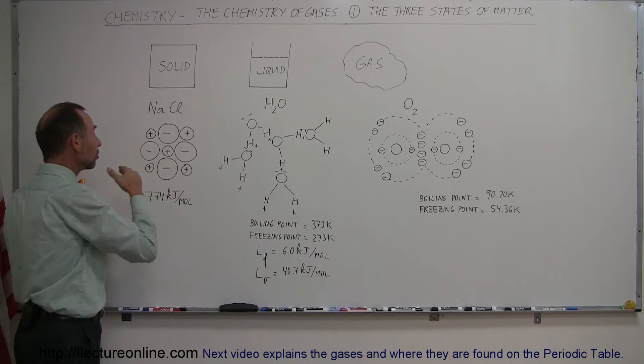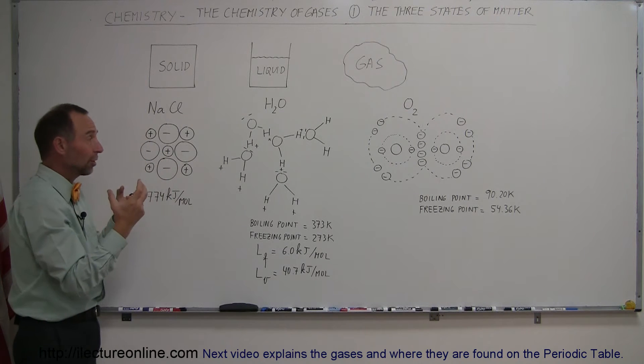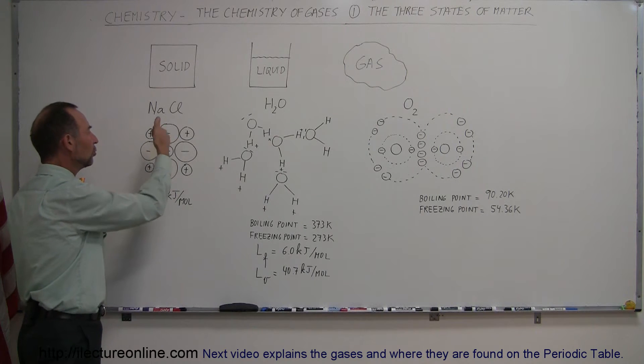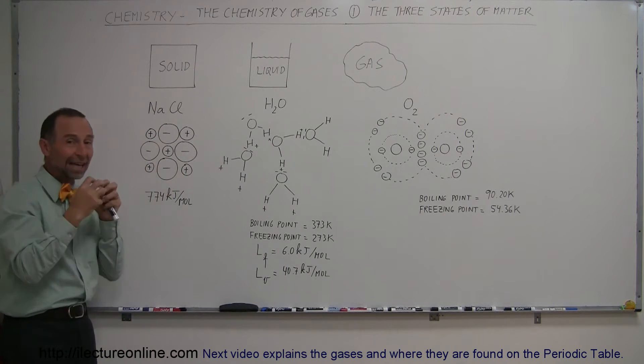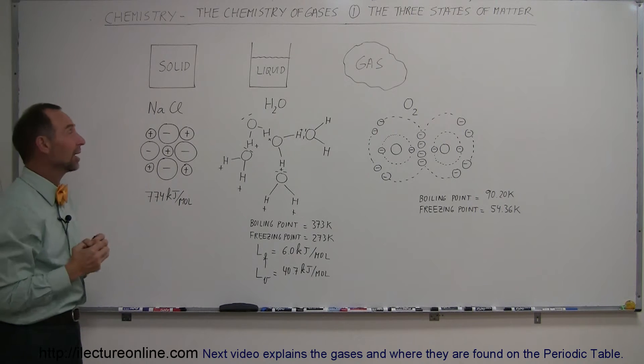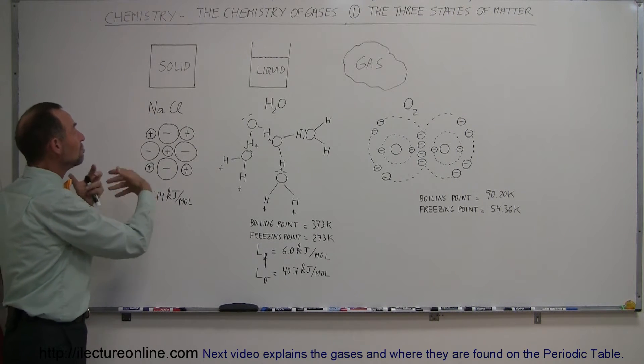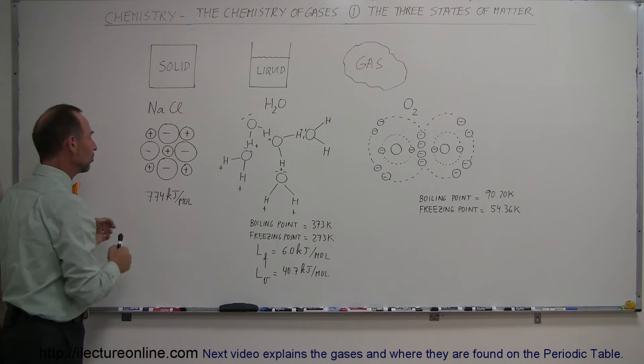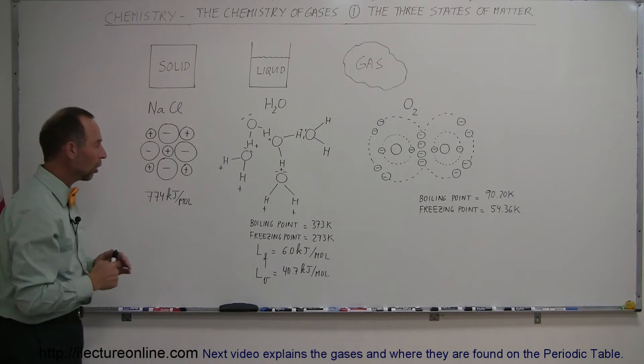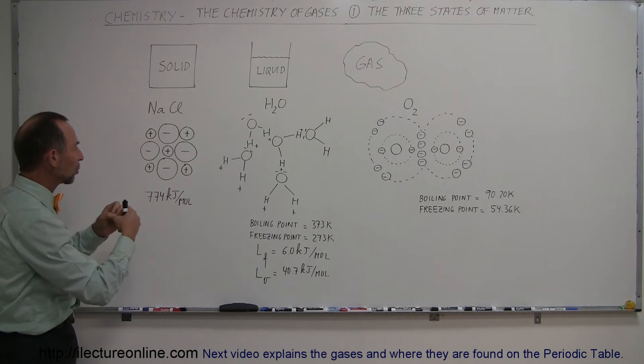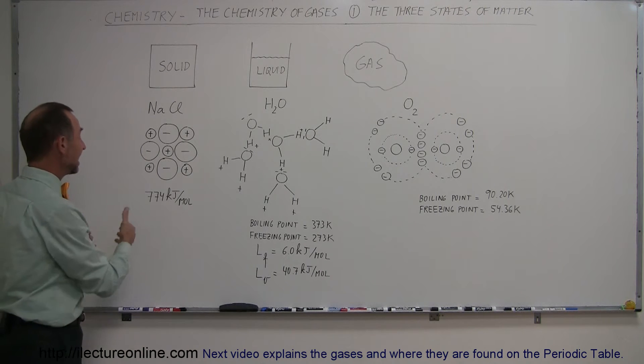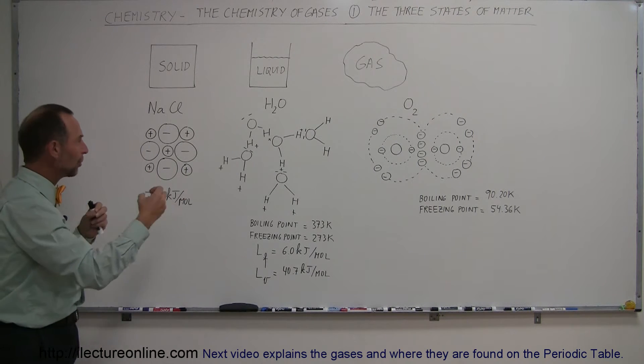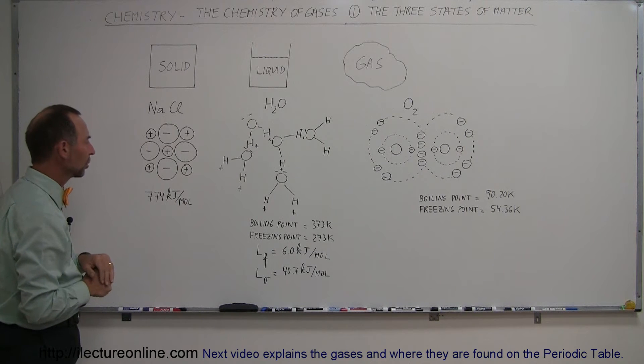So, when you heat up sodium chloride, the atoms will vibrate more and more as you heat it, but they're so strongly tied together due to these electrical charges that they don't rip apart, they stay in their lattice structure. So it's much more difficult to melt or to boil sodium chloride. And that is part of the reason why it takes 774 kilojoules per mole to separate the ions in one mole of sodium chloride.